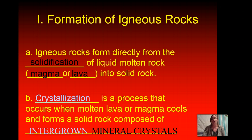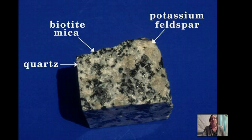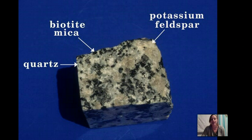Crystallization is a process that occurs when molten lava or magma cools and forms a solid rock that's composed of intergrown mineral crystals. This is a picture of biotite mica, potassium feldspar, and quartz. These are the minerals that we've actually learned about the other day. Now, these minerals make up this igneous rock. You can see they're known as crystals in here — you can see the black and white specks. That's what we refer to as the crystals.